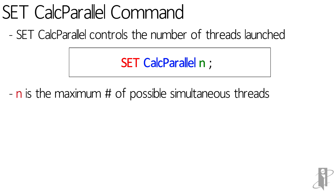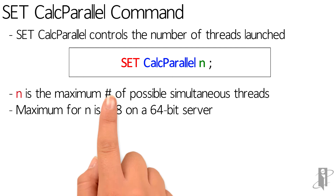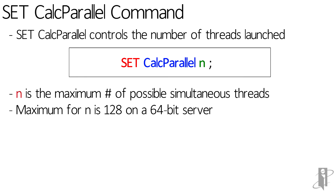By default, that number is going to be whatever is set in the Essbase CFG file. If it's not set in the Essbase CFG, it's going to default to 1. The maximum number you can go up to is 128 on a 64-bit server, at least as of Essbase 11.1.2.4.